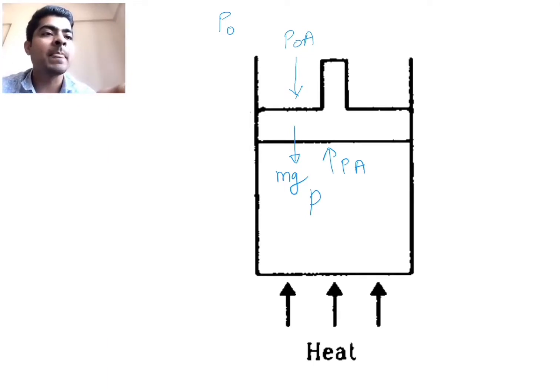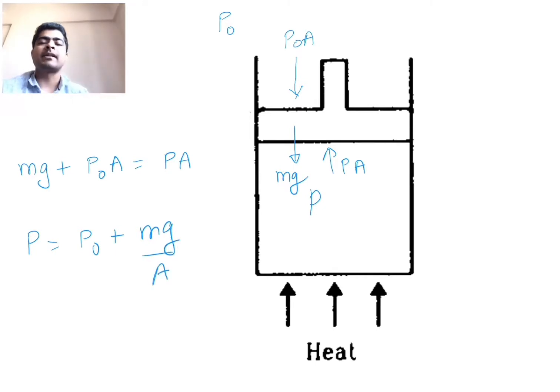And piston itself has got some mass, so mass of piston will create gravity downwards Mg. So net force on the piston should be 0, then we can easily write down that Mg plus P0 A equal to P A. So what is P equal to? P will be equal to P0 plus Mg divided by A, right?